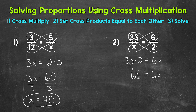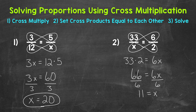Now we have a one-step equation that we can solve in order to figure out what x equals. We need to isolate that variable of x, and we can do that by dividing both sides by 6. 6x divided by 6 will isolate that x, and then we also need to do 66 divided by 6. 6x divided by 6 isolates the variable, so x equals 11.